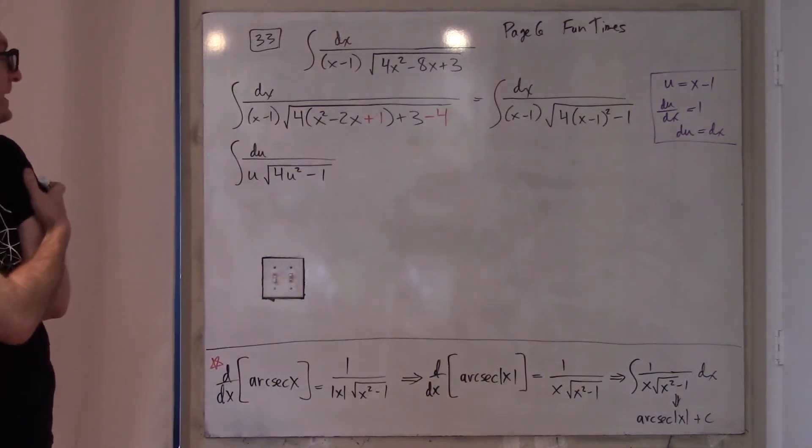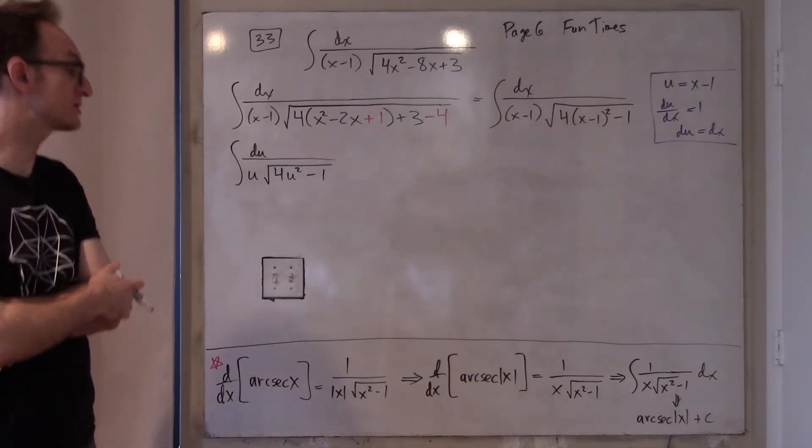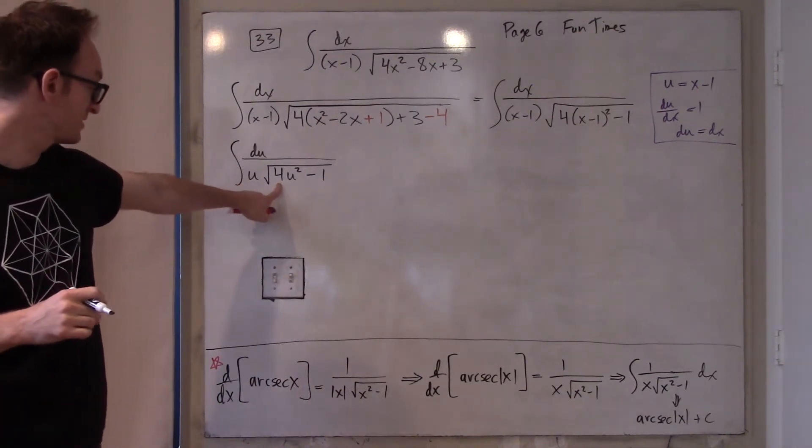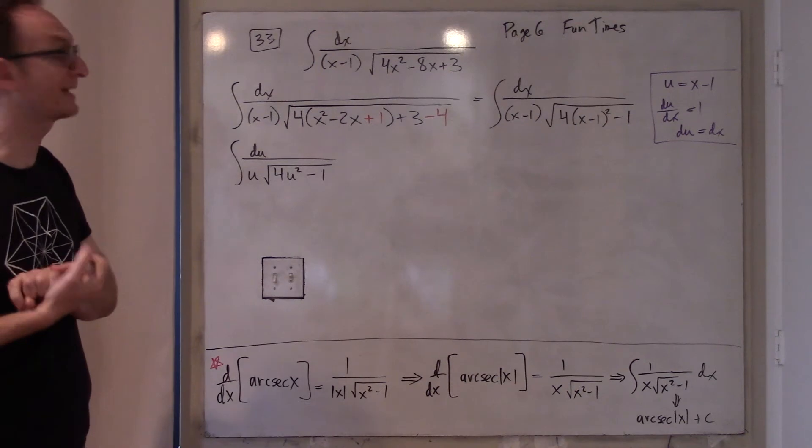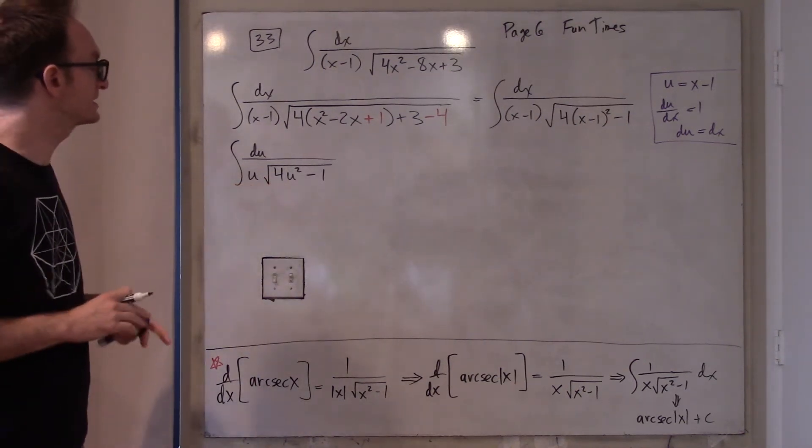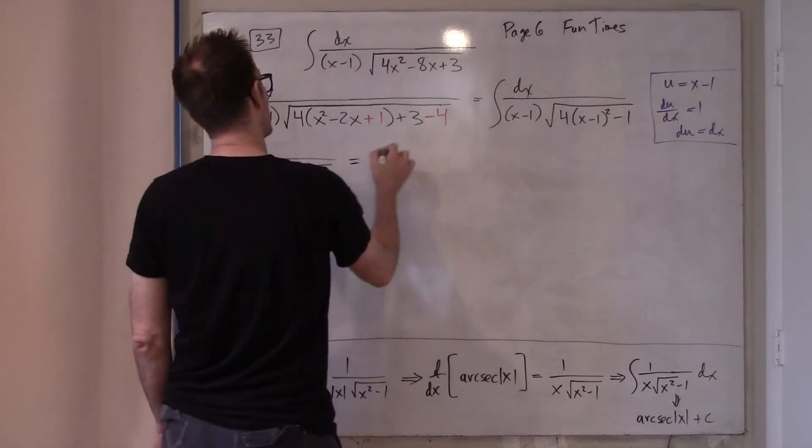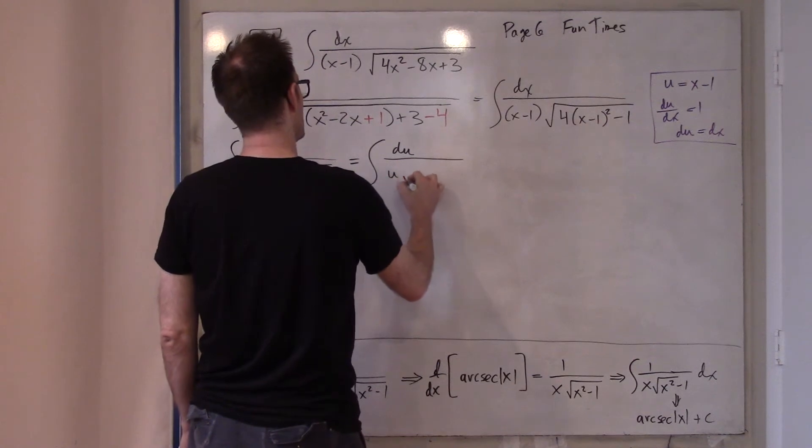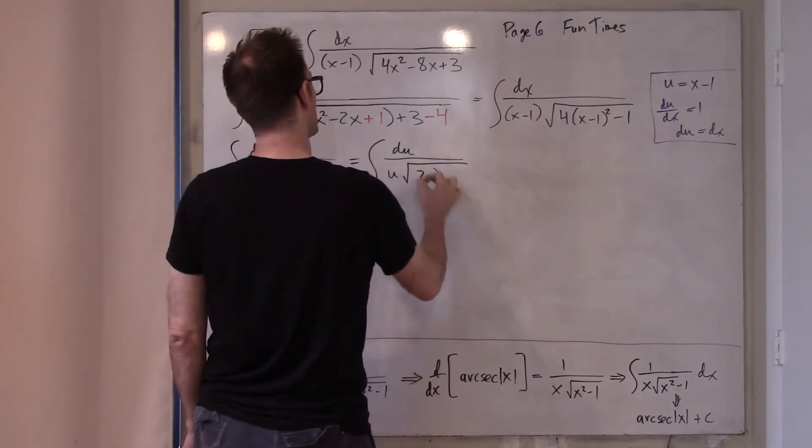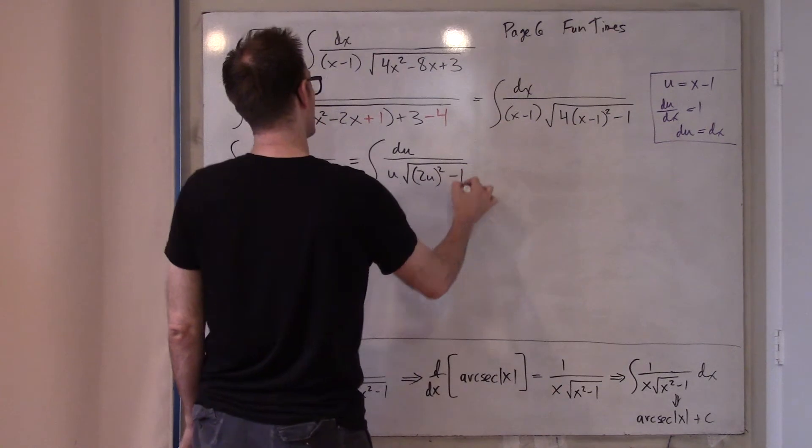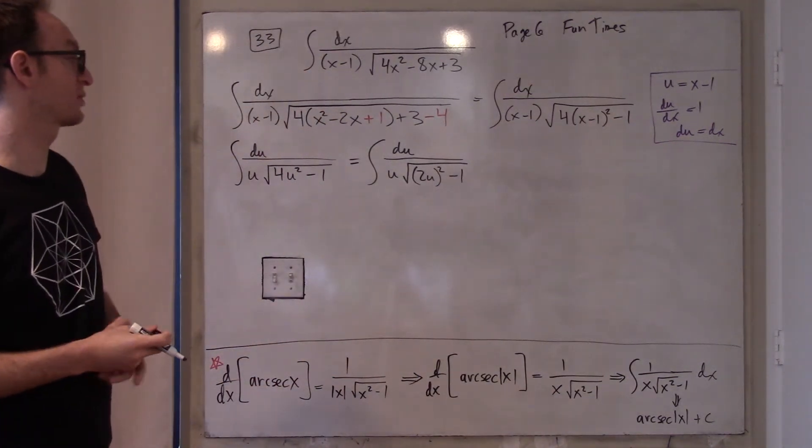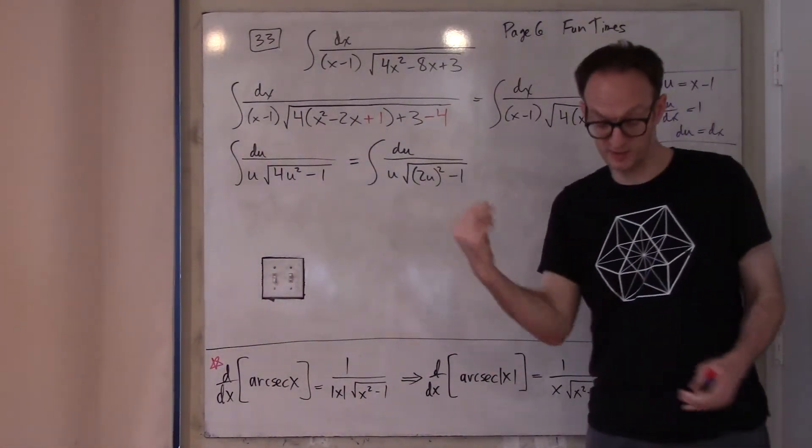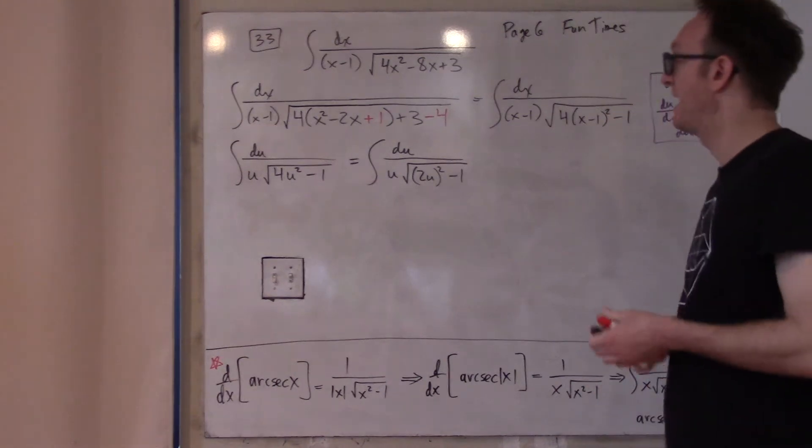Okay, and now, I'm seeing that things are almost what I want them to be, but not quite. If that 4 weren't there, then I would say that this is, in fact, exactly equal to the arc secant. But there is a 4 here, so that's slightly annoying, but only slightly annoying, because I can now write this as u on the square root of 2u quantity squared minus 1. So, that's actually not so bad.